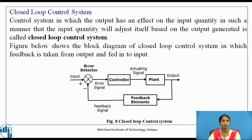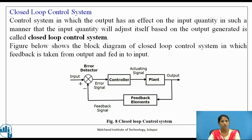The main difference between open loop and closed loop systems is the feedback element, which is present in the closed loop control system. In a closed loop control system, the output has an effect on the input — the input quantity adjusts itself based on the output generated. Figure 8 shows a closed loop control system in which feedback is taken from the output and given to the controller so as to generate the required output.